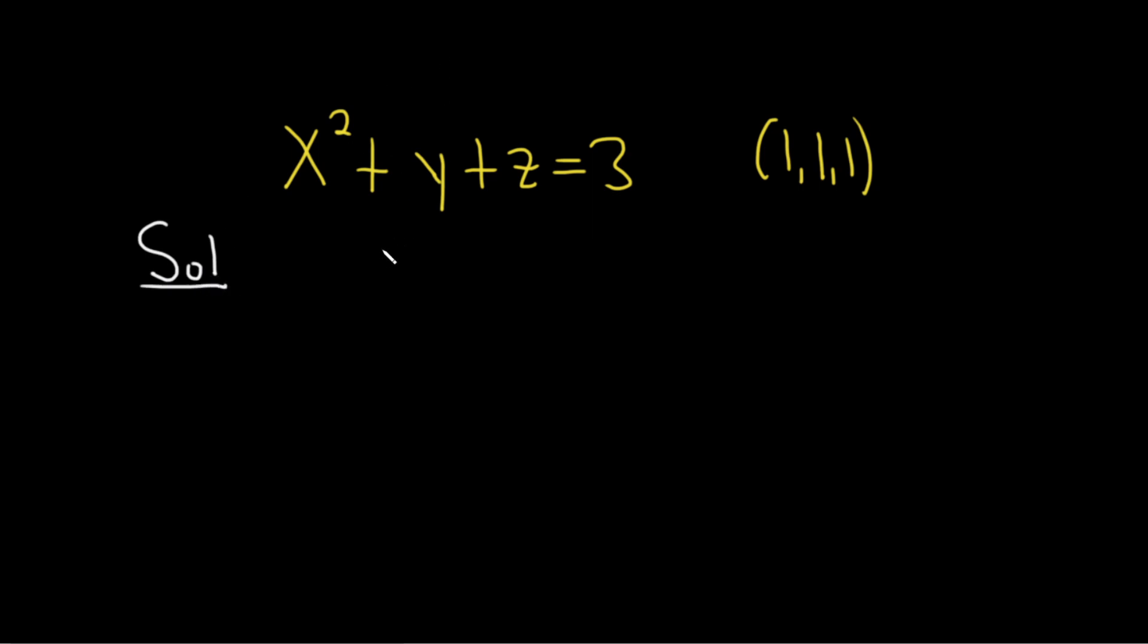The first step when finding the equation of the tangent plane is to set everything equal to zero. We'll start by subtracting three. We have x squared plus y plus z minus three and that is equal to zero. Next thing we want to do is we'll call this big F.